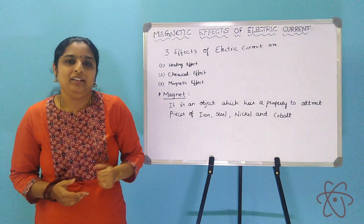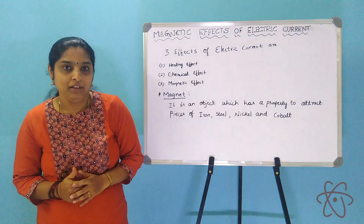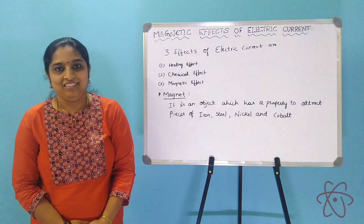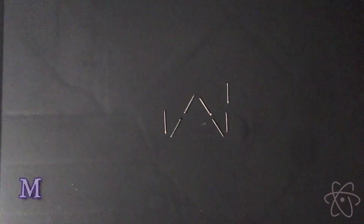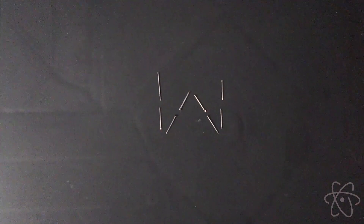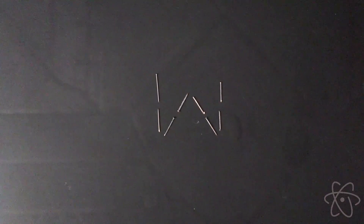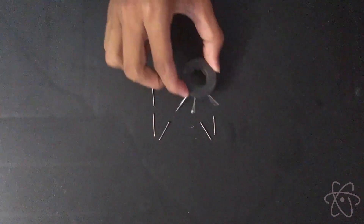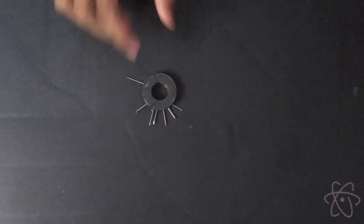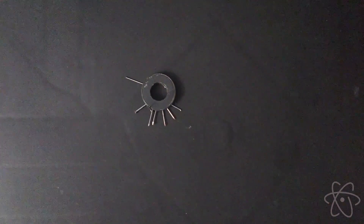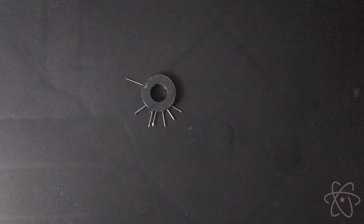Let us conduct an experiment to see how a magnet works. Let us take some iron nails. As of now you can see that they are not attracting each other — iron nails don't have the property of attracting each other. Now let us take a magnet. When we bring this magnet near the iron nails, you can see that they are all attracted by the magnet. This shows that a magnet attracts iron things, nickel things, cobalt, and some other magnetic substances.